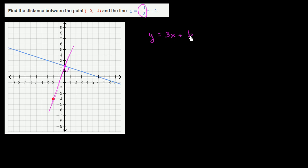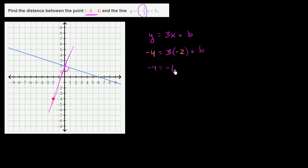To figure out what b actually is, let's substitute this point right over here. We know that not only does this line have slope 3, but this point has to sit on it, so it has to satisfy the equation. When x is negative 2, y is negative 4. So we have negative 4 is equal to 3 times negative 2 plus b. We get negative 4 is equal to negative 6 plus b. Add 6 to both sides: 2 is equal to b. So the y-intercept for the second line is at 2.